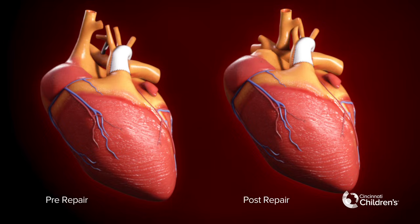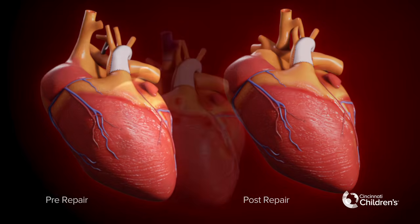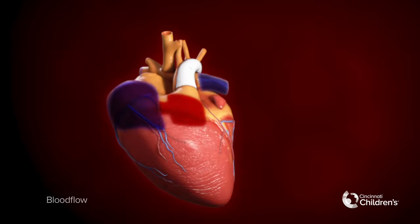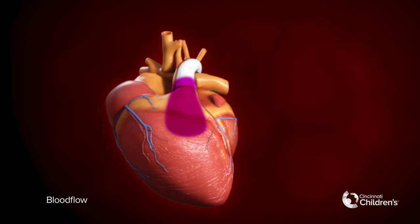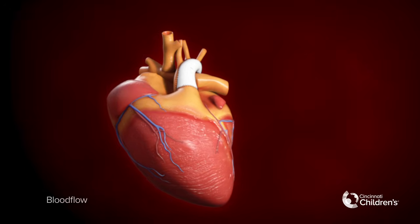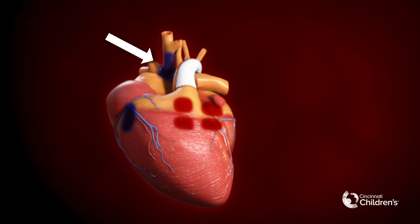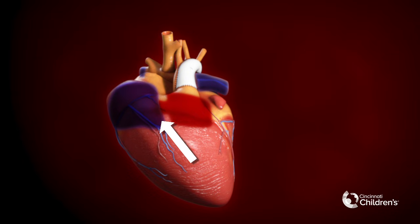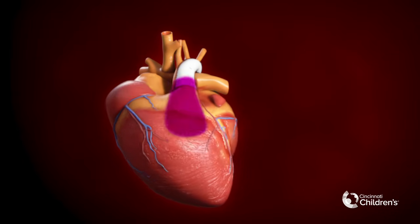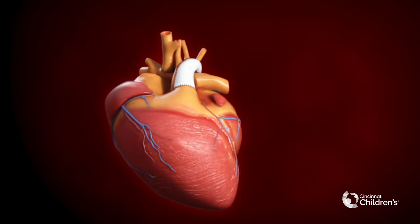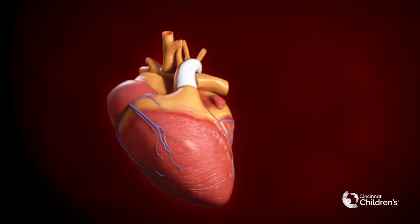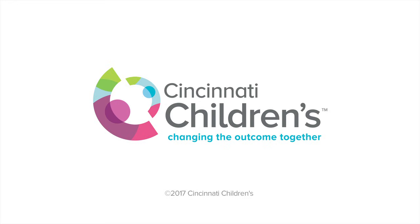Pre-repair and post-repair blood flow through the Glenn palliation. Blood passively flows from the SVC to the pulmonary arteries through the Glenn connection. Atrial mixing occurs, resulting in lower saturation than normal but remains similar to Norwood saturations.